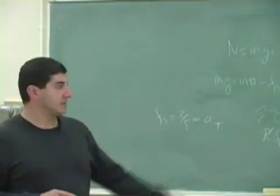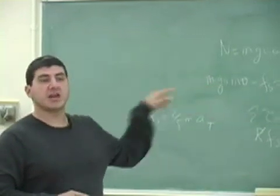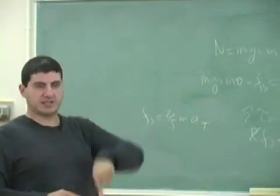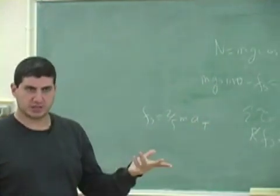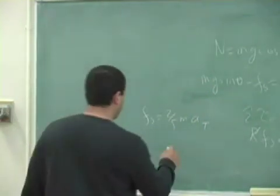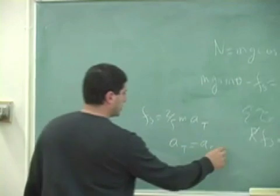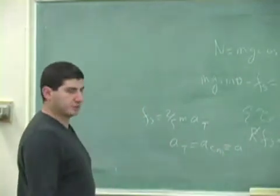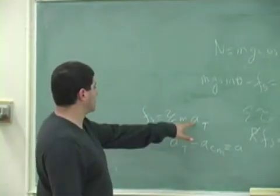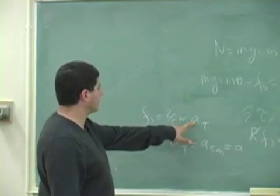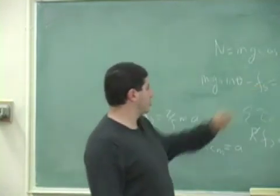And now, here's where we use the fact that if this is pure rolling motion, A tangential is equal to A center of mass. Just like the other day, we made that argument. A tangential equals A center of mass, which is just equal to A. You don't even have to put a subscript. So then, this is equal to 2 fifths MA. So then I can substitute that into over here,